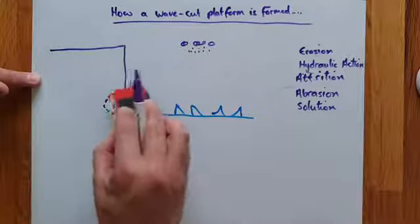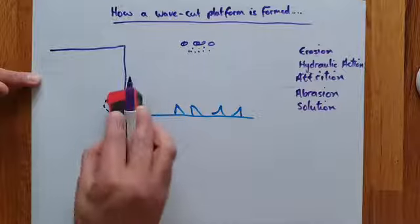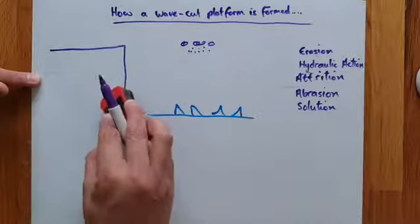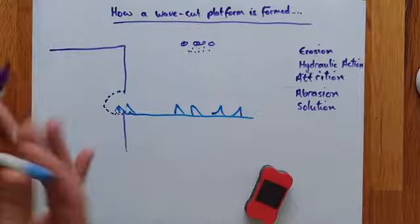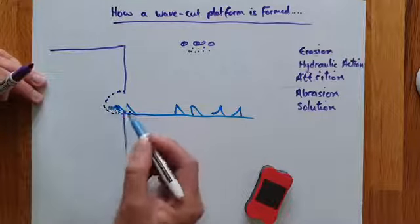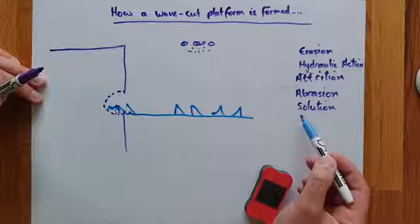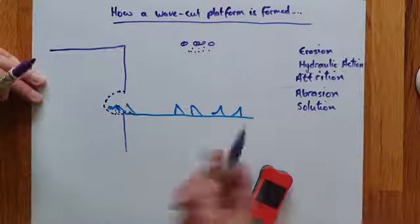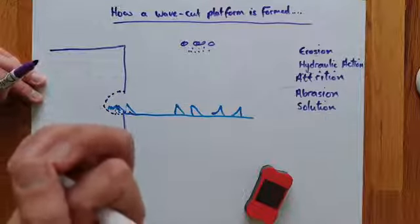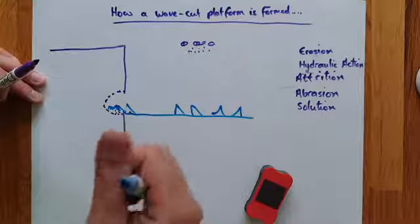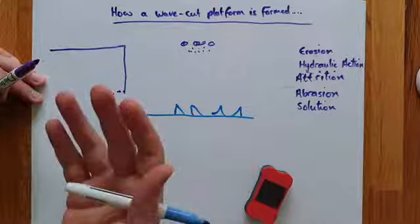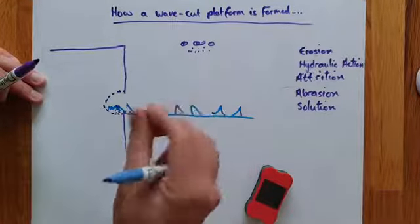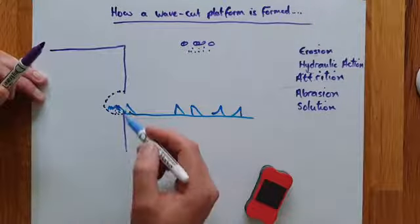And eventually those particles off the cliff wear down so small that you can't see them. And they disappear into a solution. They're dissolved into the water, a bit like sugar. You put sugar into hot water and you stir it, the sugar disappears. It's the same thing. They get so small that they disappear into the water, not to be seen.